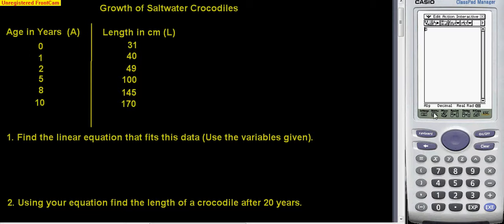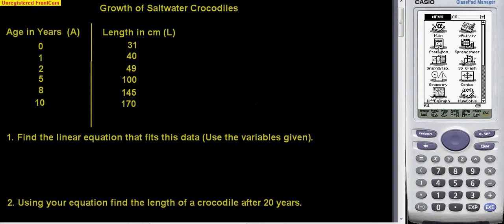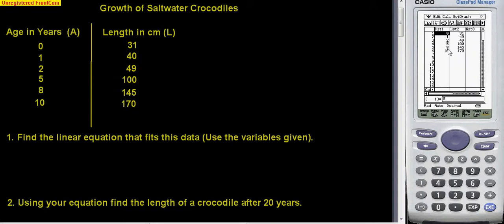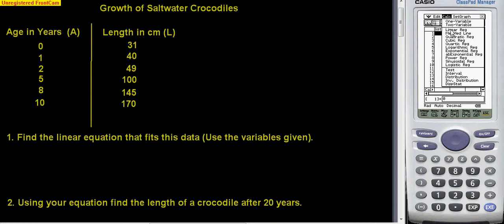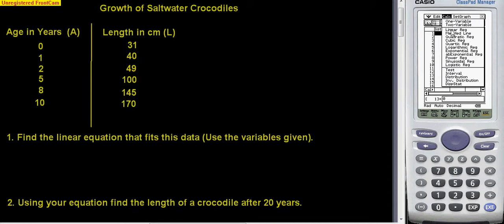Over to the calculator, I need my menu, and I go to the stats part of it. I've already put these numbers in because I knew this was coming, so once they're both in those two lists, list one, list two, let's go to the calculator part and calculate the linear regression. Make sure we're using list one and list two, which we are, and OK.